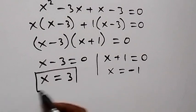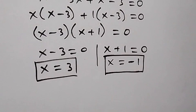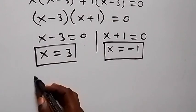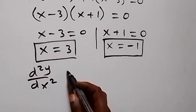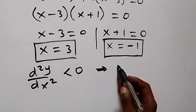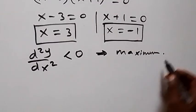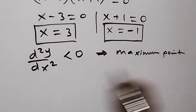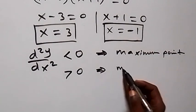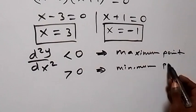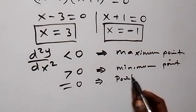So we have two turning points: x equals 3 and x equals minus 1. To investigate their nature, we take the second-order derivative, d²y/dx². If d²y/dx² is less than zero at a turning point, that point is a maximum. If it is greater than zero, the point is a minimum. If it equals zero, we have a point of inflection.